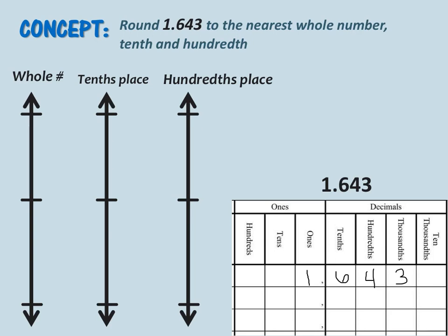To round our number to the nearest tenths place, we need to strategically decompose using the tenths place. So instead of just having six tenths, we actually have sixteen tenths. Then we look at our hundredths place — we still have four hundredths and three thousandths. We will do a similar strategy for the hundredths place: instead of starting with the tenths, we start with the hundredths, giving us one hundred sixty-four hundredths and three thousandths. As you can see, it is not the decimal that is moving — it is the place values themselves.